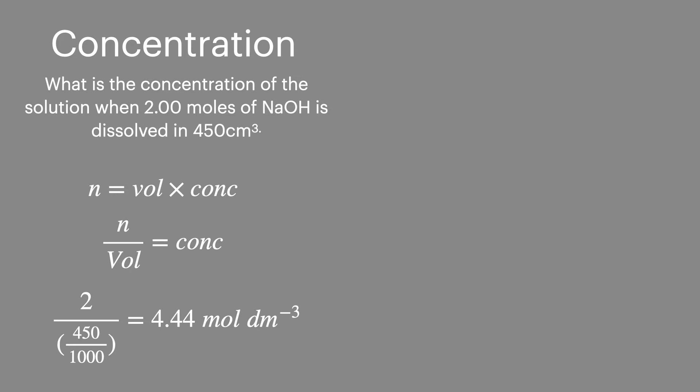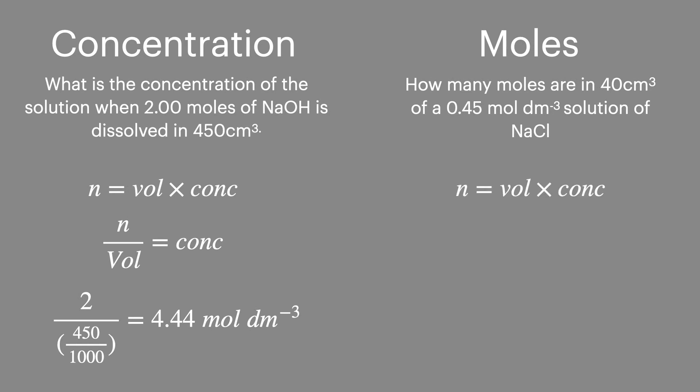In our second example, we'll calculate how many moles are present in a 40 centimetre cubed sample of the concentration of 0.45 moles per decimetre cubed. Again, we'll start with our equation, and this time we don't need to rearrange it, but we must remember to convert the volume to decimetres cubed. And then finally, we'll add in the numbers and work out the number of moles present.